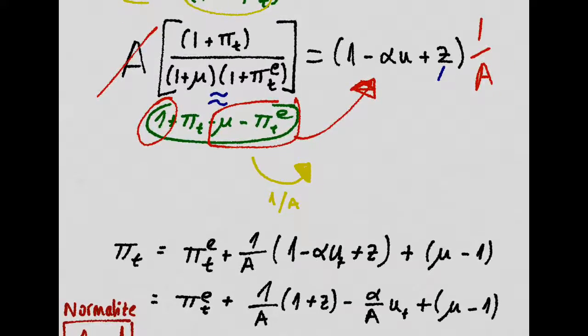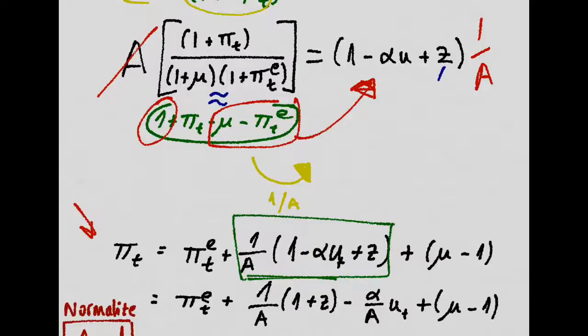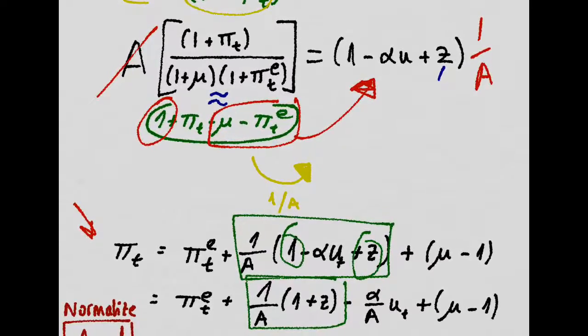So we're left with this expression right here for the inflation at time t. We'll split this into 2, 1 over A times 1 plus c, and the rest.